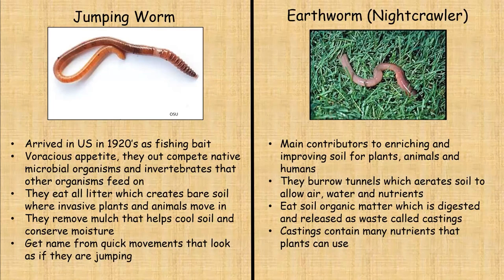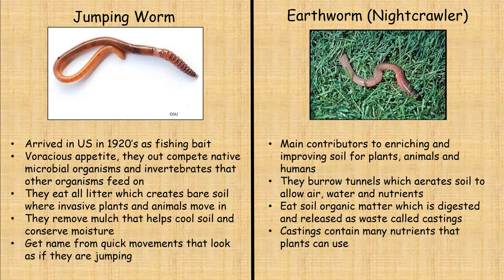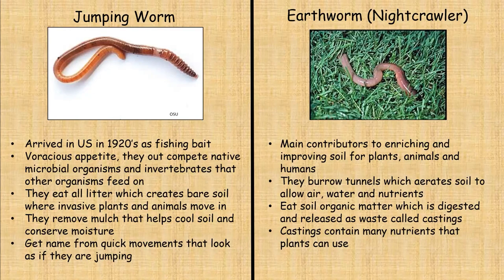Jumping worms get their name from their quick movements that look as if they are jumping, but they can easily be confused with our earthworms, also called night crawlers. Earthworms are the main contributor to enriching and improving our soil for plants. After a rain or in winter, you'll see dirt mounds in your lawn — that's an earthworm that has pushed dirt up because the lawn was too saturated. You don't want to get rid of earthworms because they burrow tunnels which aerate the soil, allowing air, water, and nutrients in. They also eat organic matter and release it as waste called castings, which contain many nutrients that plants can use.